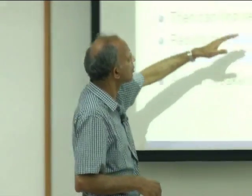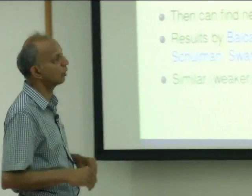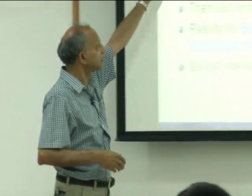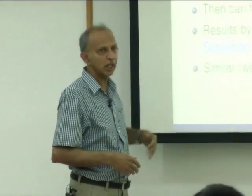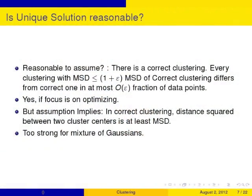Such things are called stability, and it's been studied for not only clustering but for several problems. For example, max cut — splitting a graph into two parts to maximize the number of edges going between them. You can formulate a uniqueness-of-optimal-solution condition and show that under that assumption you can find it. So that seems to be a good explanation, except we'll see that it's not so reasonable.